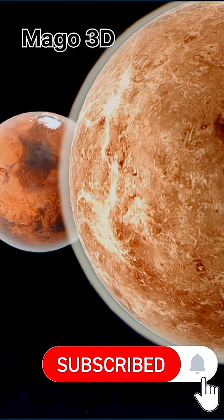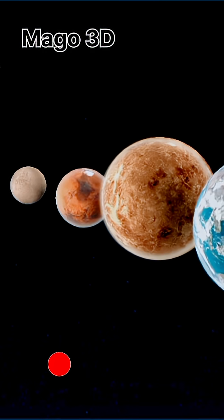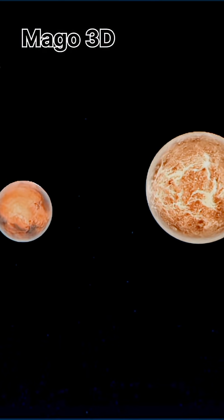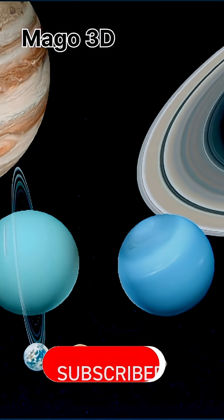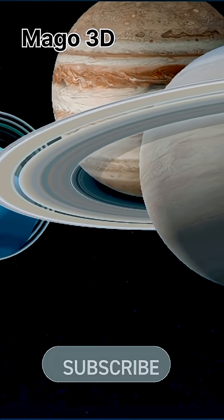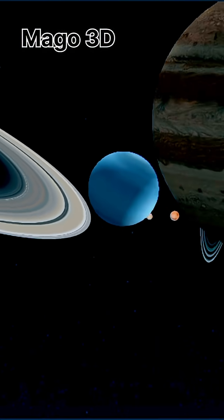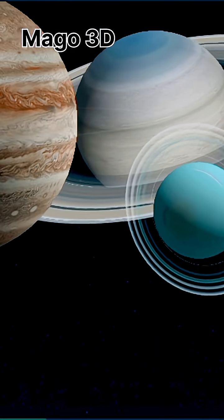Venus, the toxic twin, is roughly the same size. How original. Mars, the wannabe Earth, is about half the size. And Mercury, the runt of the litter at 4,879 kilometers in diameter.